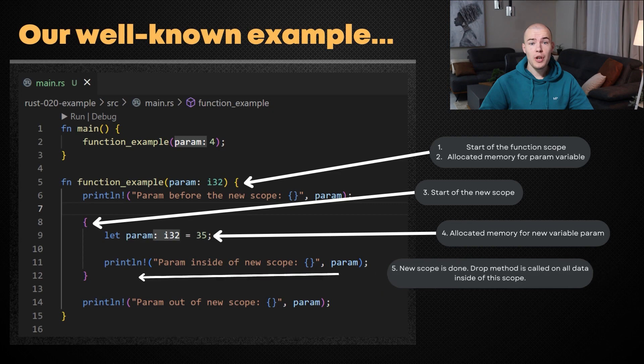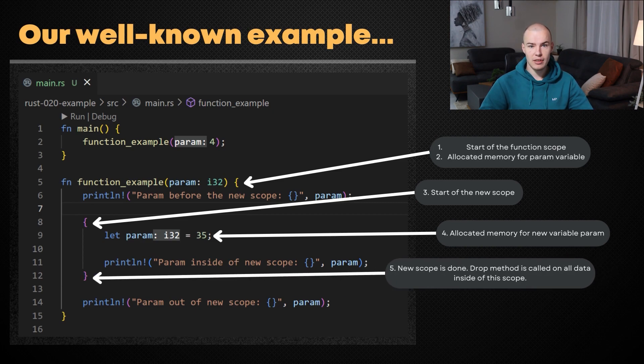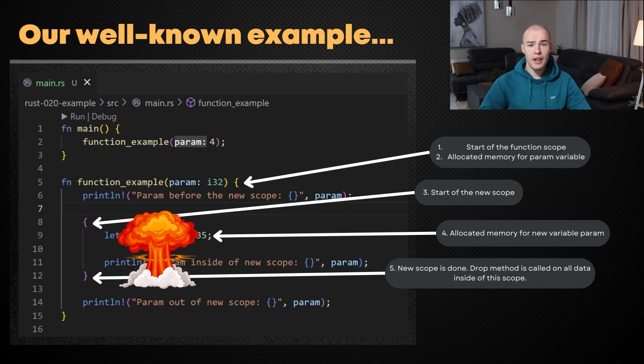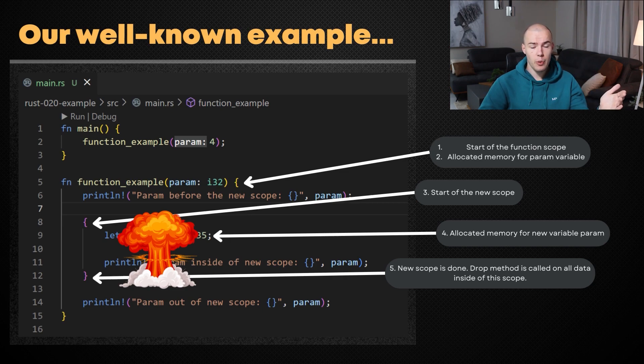At point number 5, we reach the end of the new scope. That means the Rust compiler is going to invoke its RAII functionality — basically it's going to call the drop method on all variables allocated inside of this scope, in this case the param variable. After point number 5, the original parameter param is going to be available again, because the drop method deallocated the param that was created inside the new scope — it no longer exists, it was popped off the top of the stack. So the parameter variable is the only thing left on the stack, and when the compiler seeks the identifier param, it finds the parameter value and we get result number 4.